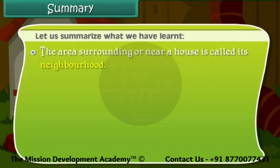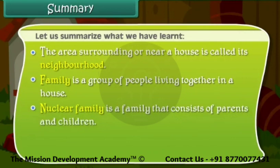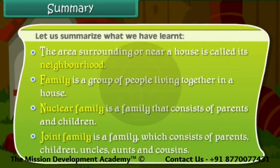Let us summarize what we have learned. The area surrounding or near a house is called its neighborhood. A family is a group of people living together in a house. A nuclear family consists of parents and children. A joint family consists of parents, children, uncles, aunts, and cousins.